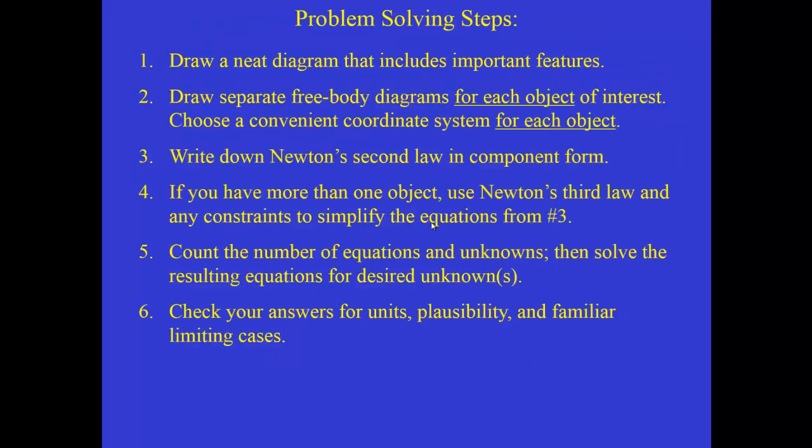Now, for problem solving steps, we will always follow these six steps when we set up Newton's second law problems. First, we'll always draw some kind of a neat diagram that includes important features of the system that we're studying. Secondly, we'll draw separate free body diagrams for each object of interest. And having drawn those free body diagrams, we will then choose a convenient coordinate system that will make analyzing the problem simple. And we can use different coordinate systems for different objects if we have a system that involves more than one object.